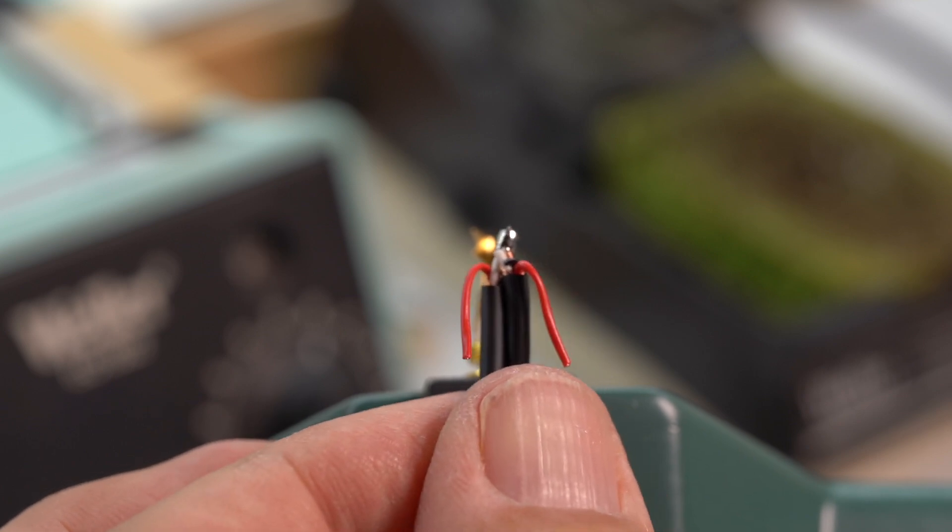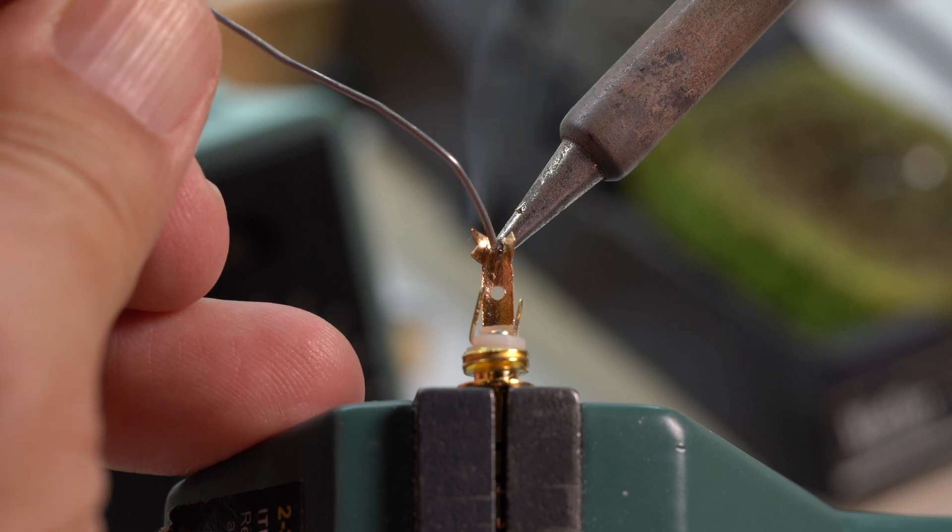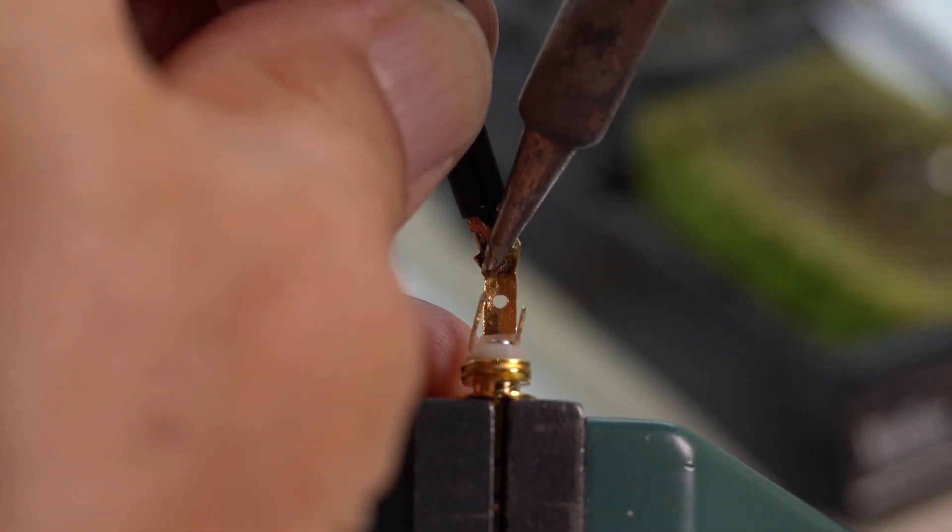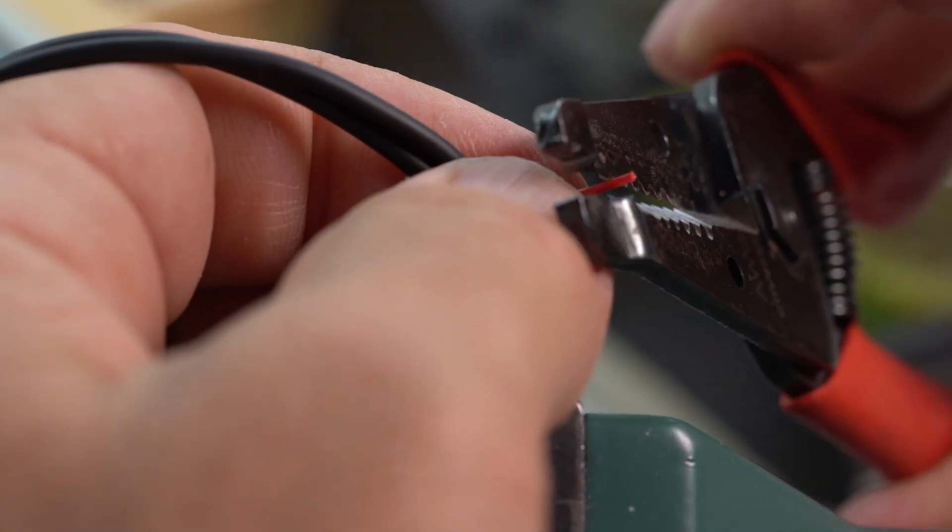Once tinned, cut back all but about an eighth of an inch or so. Tin the ground connection on the connector and solder. This is a lot easier when I didn't have a camera in my way. Alright, let this cool and tug on it gently to make sure it's tight.